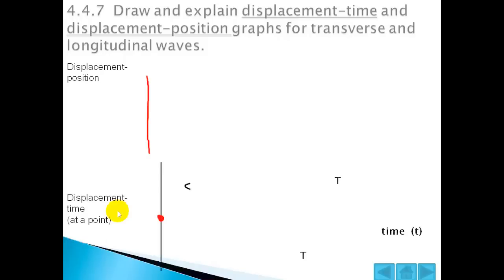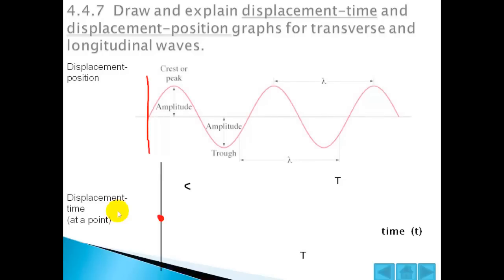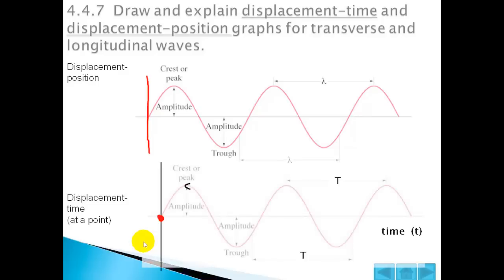Draw and explain displacement-time and displacement-position graphs for transverse and longitudinal waves. Here we have a displacement-position wave — this is the position. From one crest to another will be the wavelength. If you have a displacement-time graph, this is amplitude again, and from one crest to another crest is one time period, because the horizontal axis is a measurement of time. Be aware whether it's a displacement-position graph or a displacement-time graph.